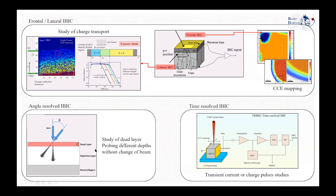Another variation of IBIC is what is called Time-Resolved IBIC. In this situation, in parallel with the IBIC map, one connects a fast broadband amplifier directly to a digital oscilloscope. This way, one can study the transient current or charge pulses during irradiation.